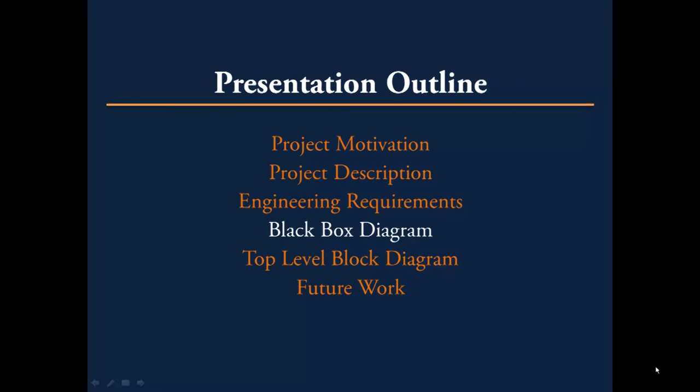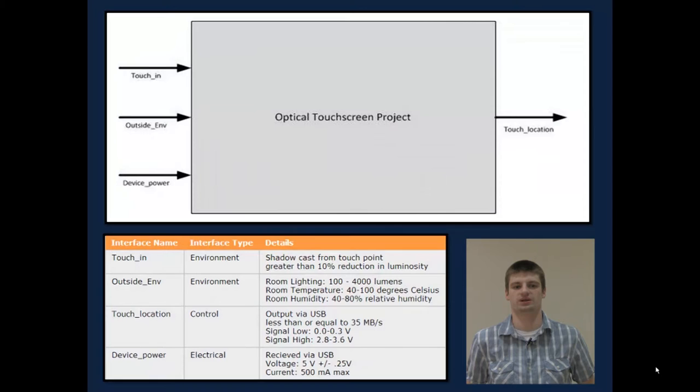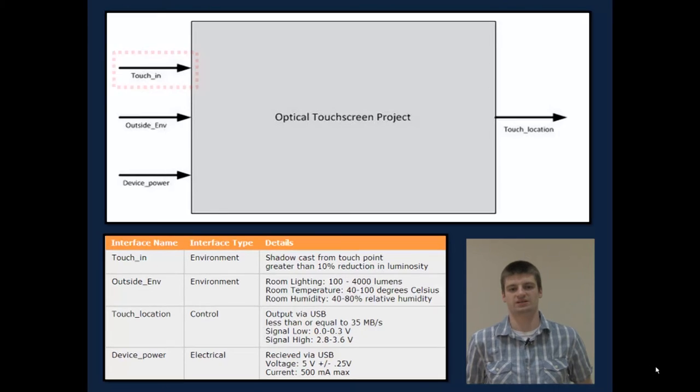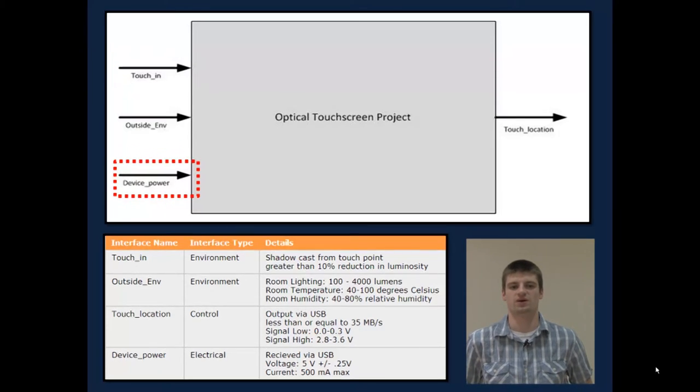Next, I will go over the top-level black box diagram. As you can see, we have three inputs and one output. The three inputs we have are the touch input, device power, and outside environment. The touch input is a shadow cast by the finger or pointer onto the touch point. The second input is the device power. The device is powered by USB, which runs at 5 volts plus or minus a quarter of a volt, and a current of 500 milliamps. Other factors that may interfere with our device and thus need to be accounted for are room lighting, temperature, and humidity.